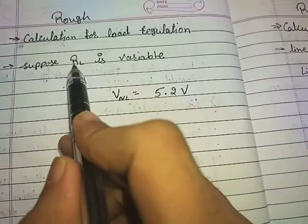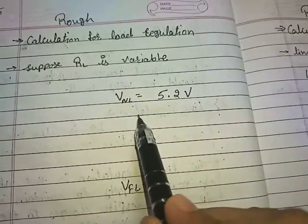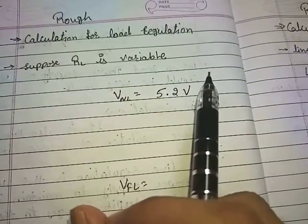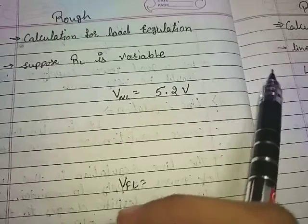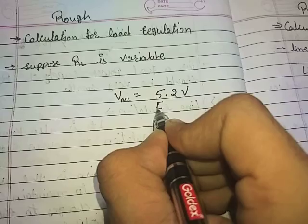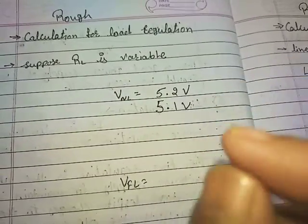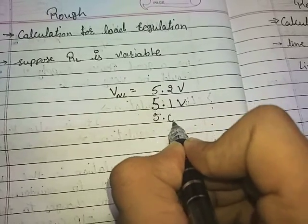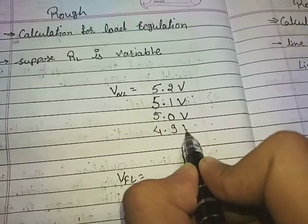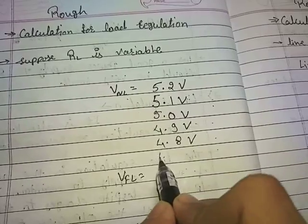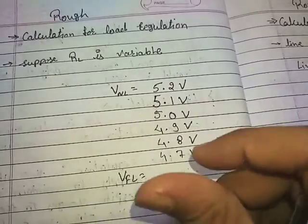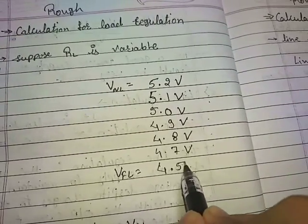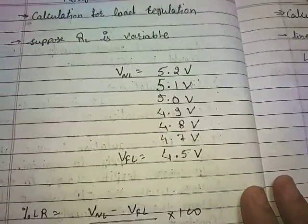Now I attach a variable load resistor. After adding the load, there is a voltage drop across the resistor. I set it to its minimum value and got 5.1 volts. As I slowly increase the resistance, the voltage also starts dropping. At one stage I put it at maximum, and in that case the output voltage is 4.5 volts across the load resistor.